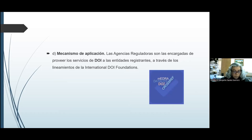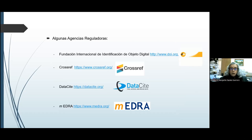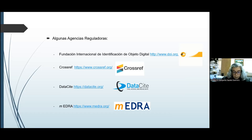El último de los aspectos es el mecanismo de aplicación. Las agencias reguladoras son las encargadas de proveer los servicios de DOI a las entidades registrantes a través de los lineamientos de la International DOI Foundation. Algunas agencias reguladoras entre las más conocidas son la Fundación Internacional de Identificación del Objeto Digital, CrossRef, DataCite y MED.